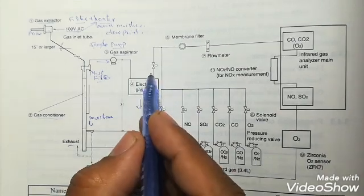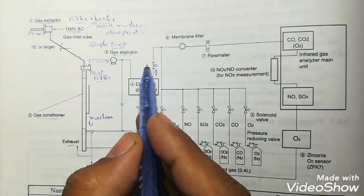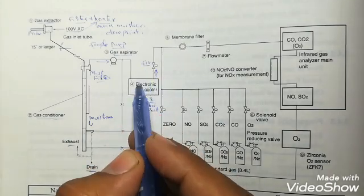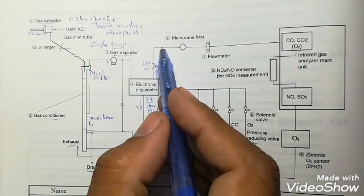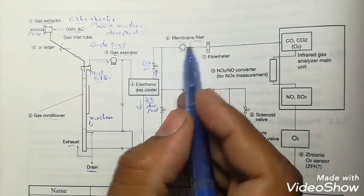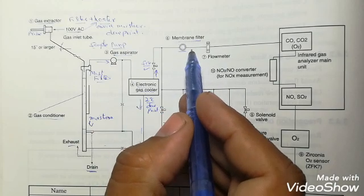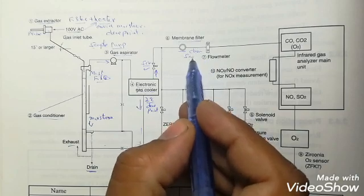This cooler cools the sampling gas up to 2 degrees centigrade. This is the dew point. Any moisture inside the sample changes into water and then drains out. A clean sample outside of the gas cooler is given to this SOV.